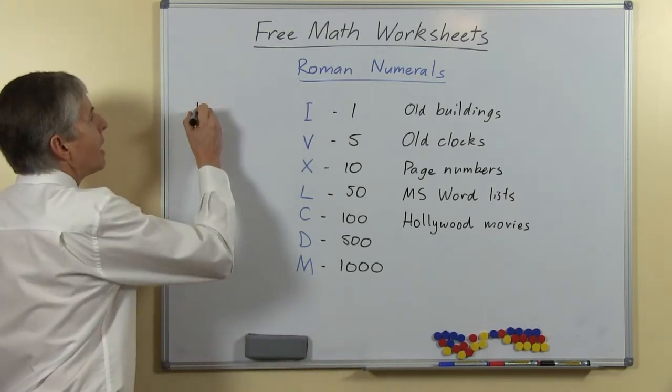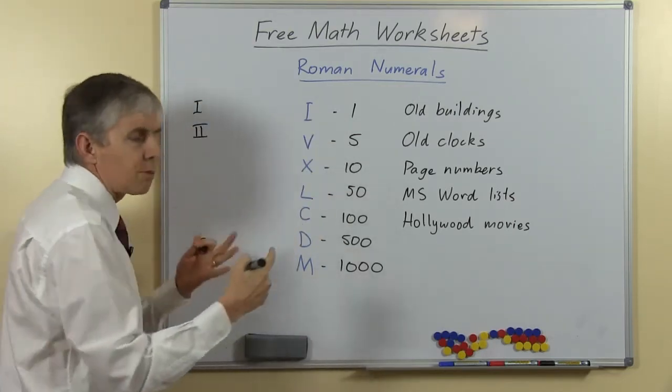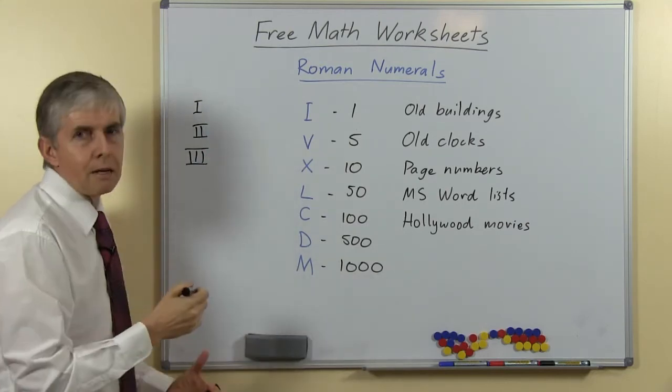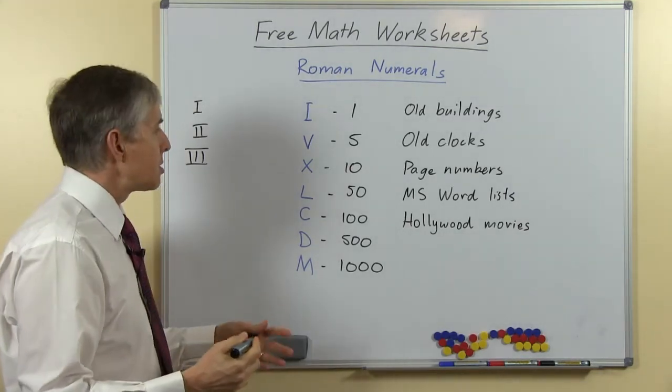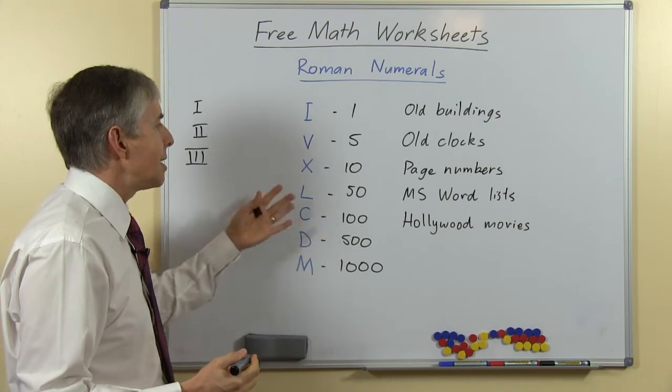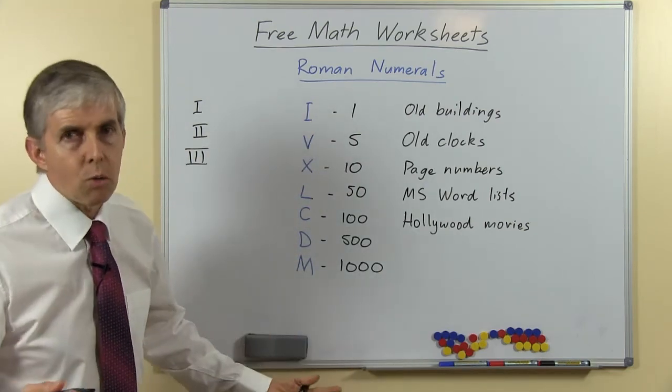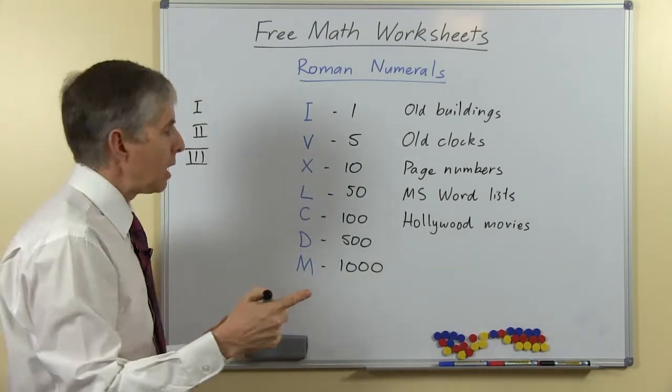And of course to make values other than the ones that have a specific symbol, the Romans would join them together and accumulate value by adding the individual values. And so students can easily see that we can make up a value like a child's age might be 12 or something—you could add an X and two I's and then you have the value 12.